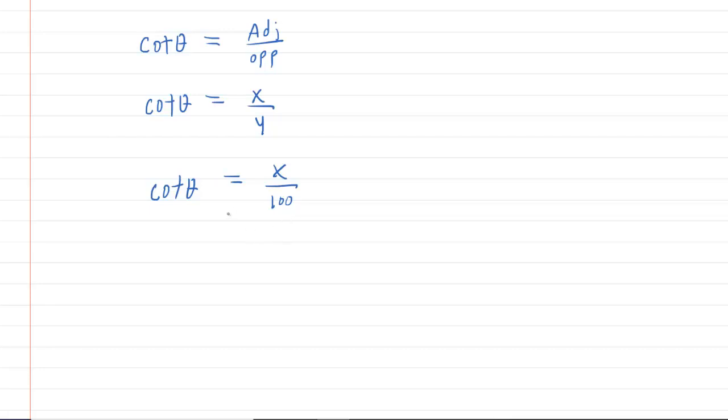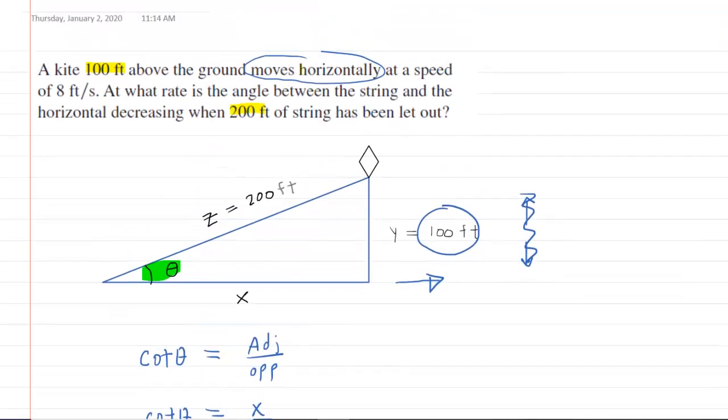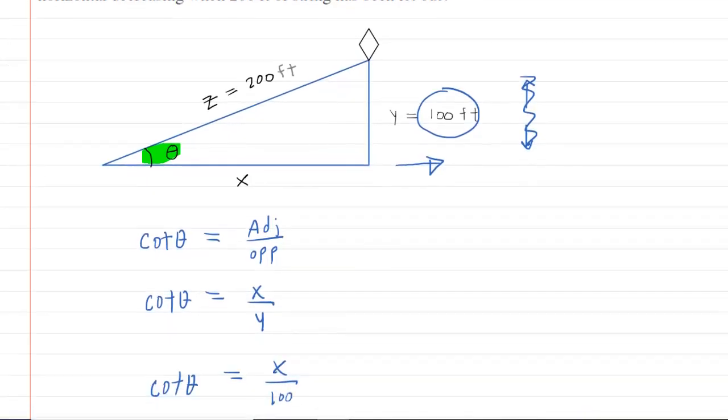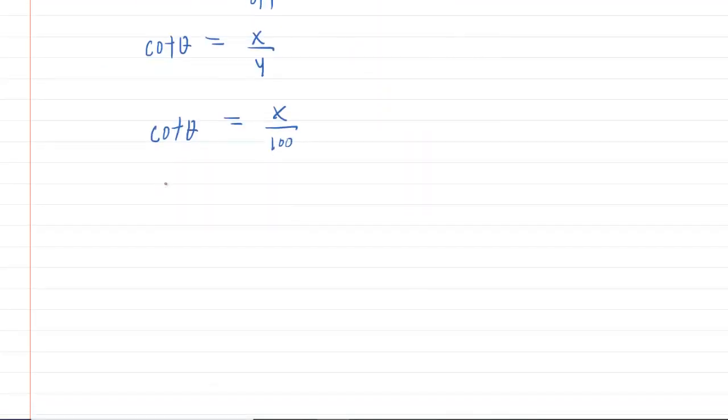Now that we have our equation, we're going to differentiate it with respect to time. We know to do that because the question is asking us for a rate. Anytime a calculus question asks you for rate, you want to differentiate with respect to time. The derivative of cotangent of theta is negative cosecant squared of theta. But the chain rule demands that we multiply by the derivative of our variable, which is d theta dt.